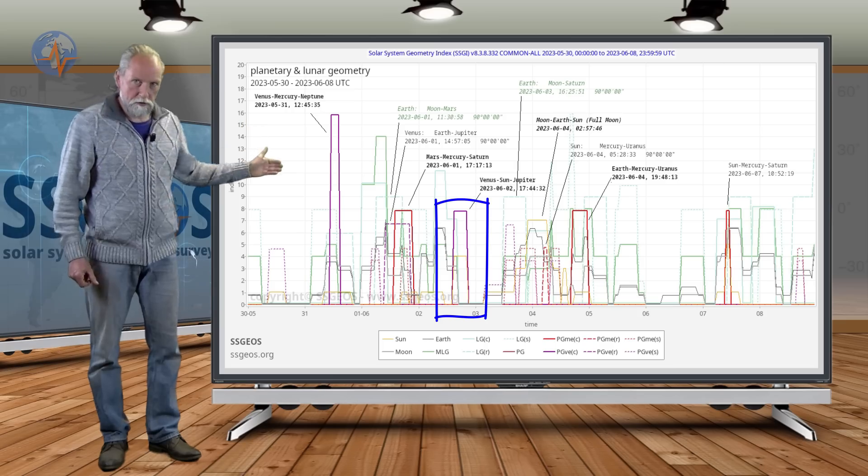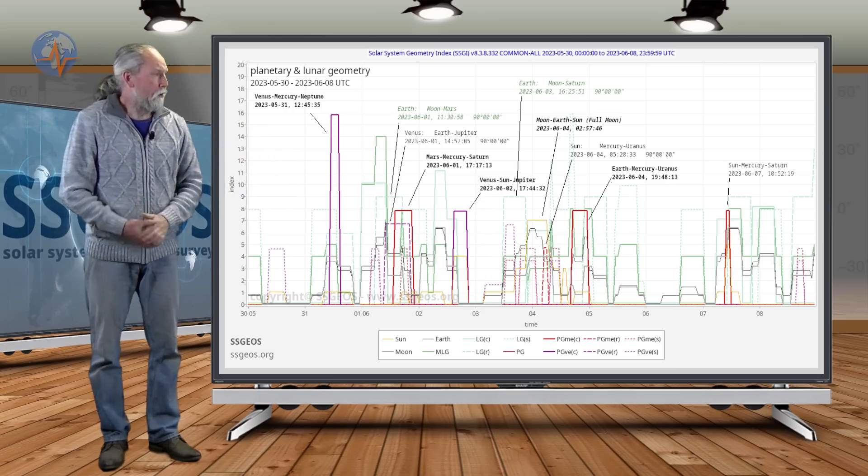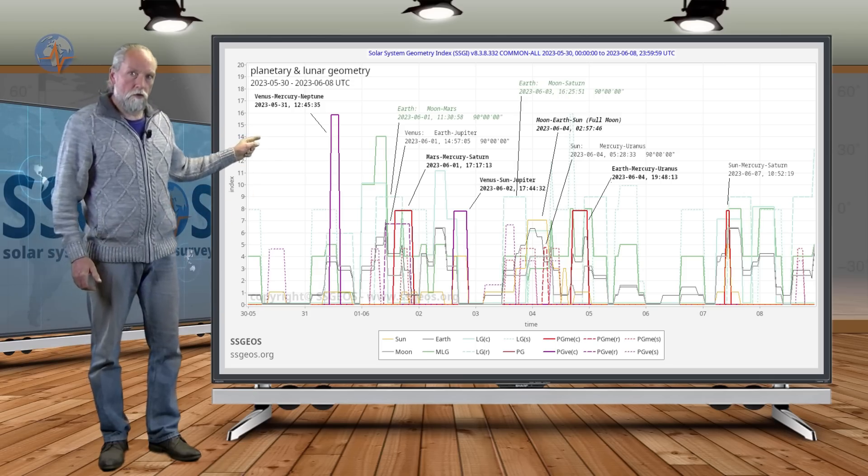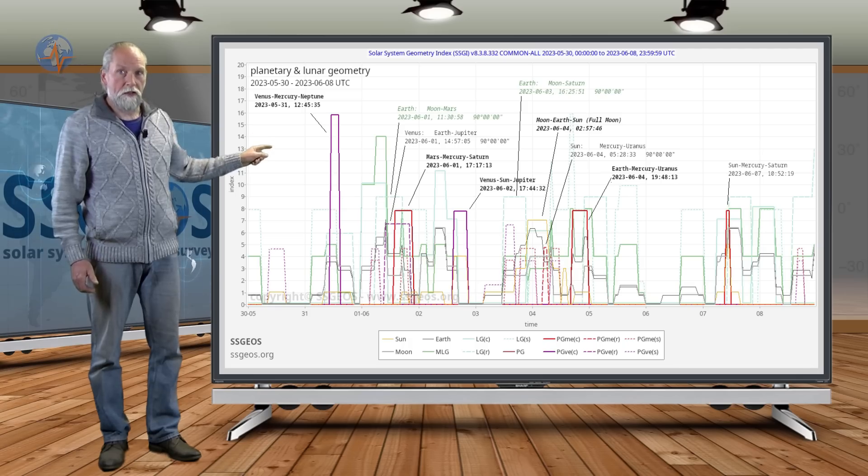Venus, Sun, Jupiter—and if you may recall, we had Sun, Venus, Jupiter on 5 February just before the major earthquakes in Turkey.